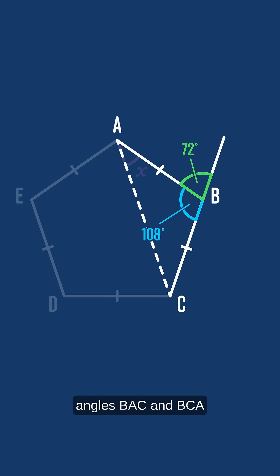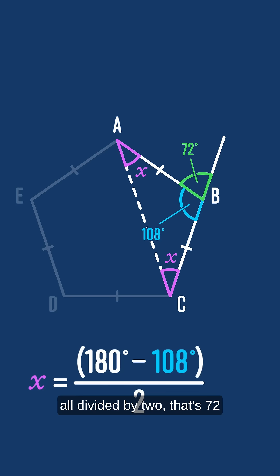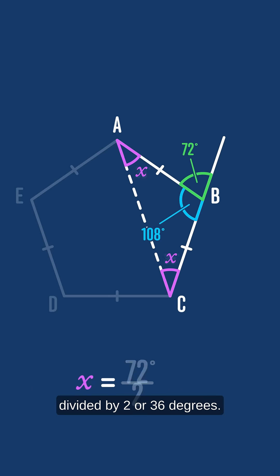So since ABC is isosceles, angles BAC and BCA are both equal to X, and so we have 2X plus 108 equals 180. And so X is 180 minus 108 all divided by 2, that's 72 divided by 2 or 36 degrees.